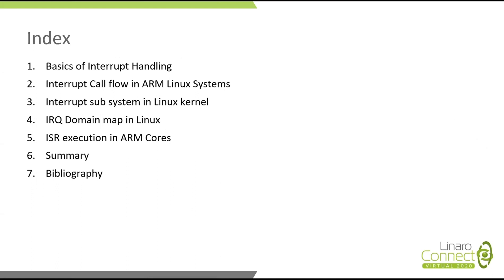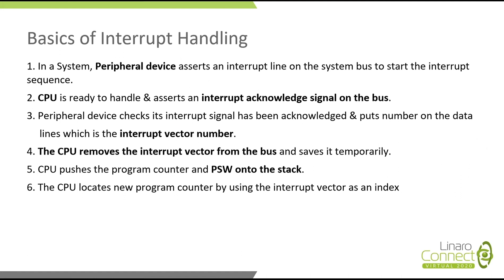Let's start from the interrupt handling in any embedded system or a basic device — how it works. From a system point of view, any peripheral device or any IO device takes one interrupt line on the system bus to start the interrupt sequence. Once the CPU is ready to handle and acknowledge that signal on the bus, once that interrupt vector number is ready, the CPU takes the interrupt vector from the bus, saves it temporarily, and pushes the program counter and PSW on the stack. This is all the basic one that everyone knows.